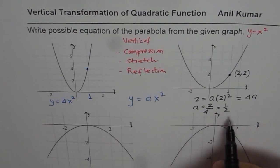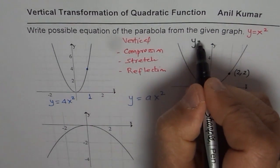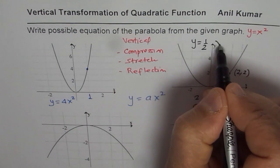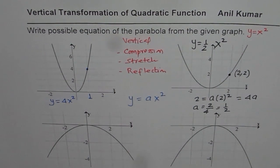Therefore, we get equation of this function as y equals to half x square. That is how you can find the equation of a graph which is vertically stretched or compressed or reflected.